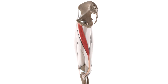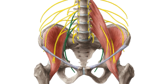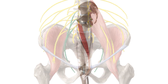Now let's get back to the gracilis. Here it is once again isolated on the screen. As you know, a muscle cannot perform its functions without a proper nerve supply, and the gracilis is no exception. This muscle is supplied by the obturator nerve, which you can see highlighted in green on the screen. This nerve forms part of the lumbar plexus and arises from the second, third, and fourth lumbar segments.